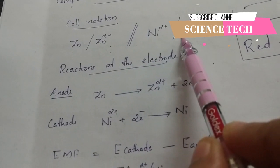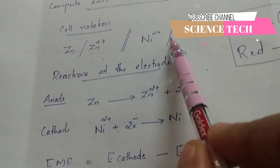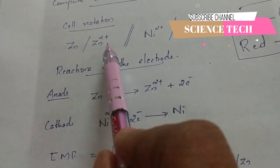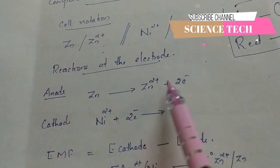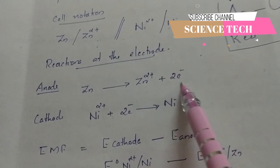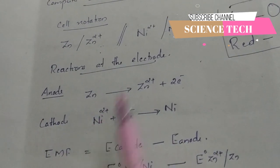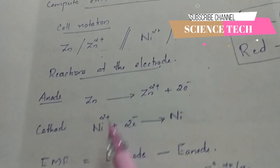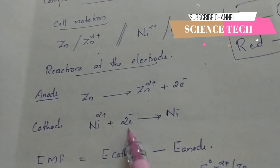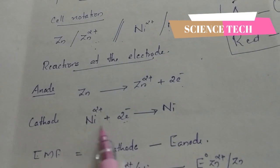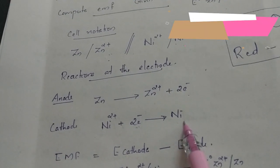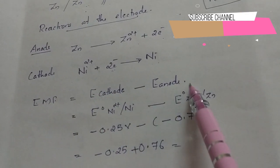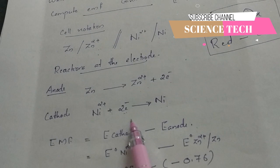It has a reaction in the cathode. It has a cell representation in the electrode reaction. We have Zn at the anode, Zn2+ aqueous. The EMF — we will write it. Anode, and we will find nickel.